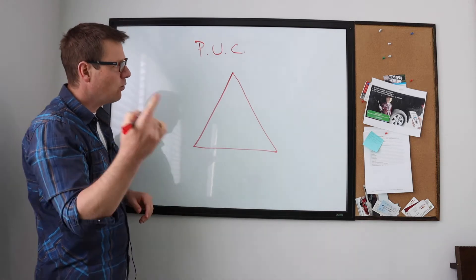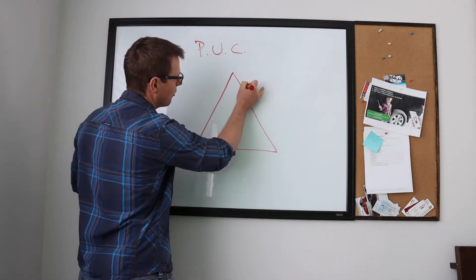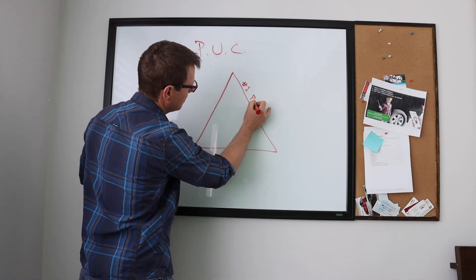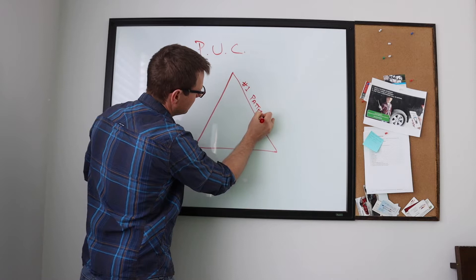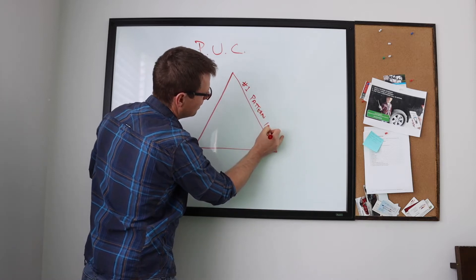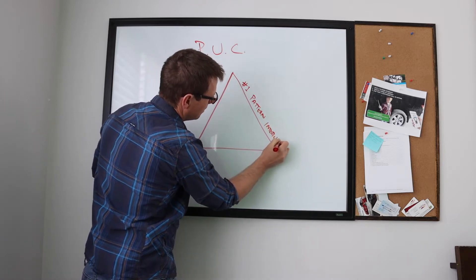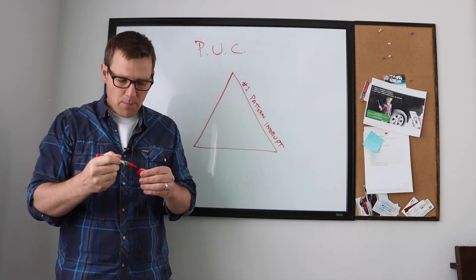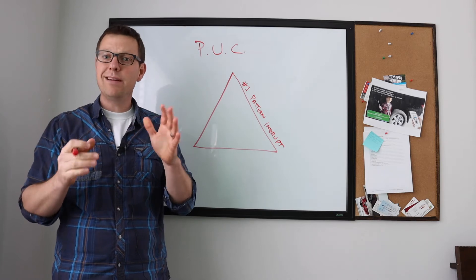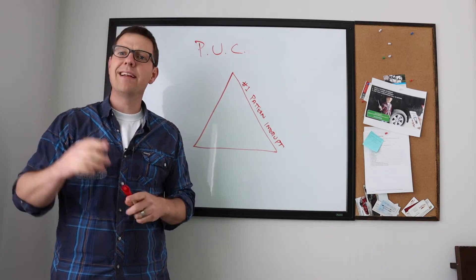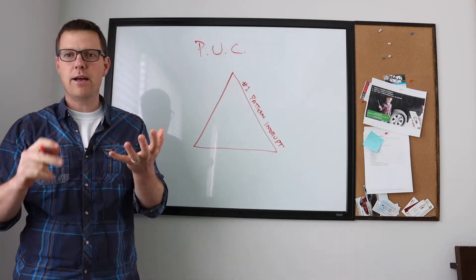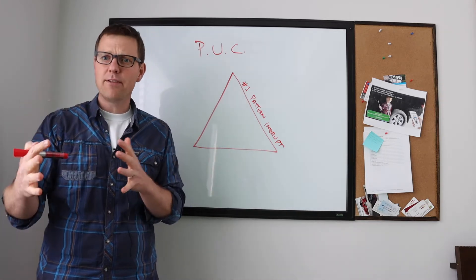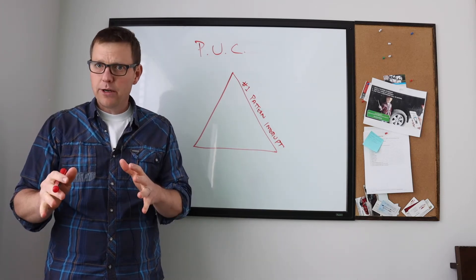Number one is called a pattern interrupt. A pattern interrupt is something that stops you and gets your attention. Keep in mind, all of your customers are seeing between 5,000 and 9,000 marketing messages per day on Facebook, LinkedIn, Twitter, radio, TV, print - all these different things out there. A lot of marketing messages.